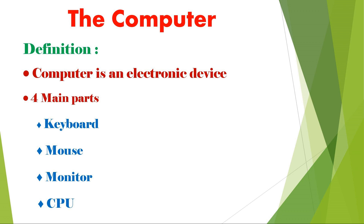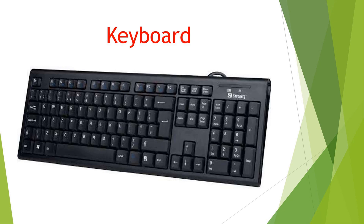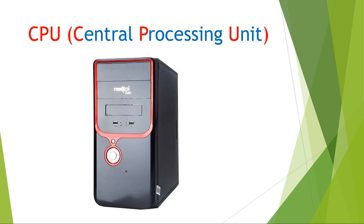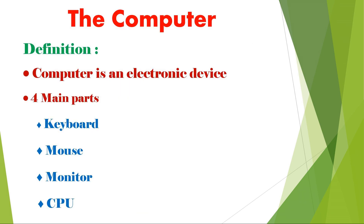A computer is an electronic device and it has four main parts. Do you know what the four main parts are? Yes, the four main parts are keyboard, mouse, monitor, and CPU. These four parts all together are called the computer system.